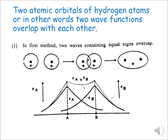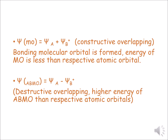The wave function of the bonding molecular orbital is: ψ_bonding = ψ_a + ψ_b+, where ψ_a is the wave function of the H atom and ψ_b+ is the wave function of H+. By constructive overlapping, the bonding molecular orbital is formed, and its energy is less than the respective atomic orbitals.